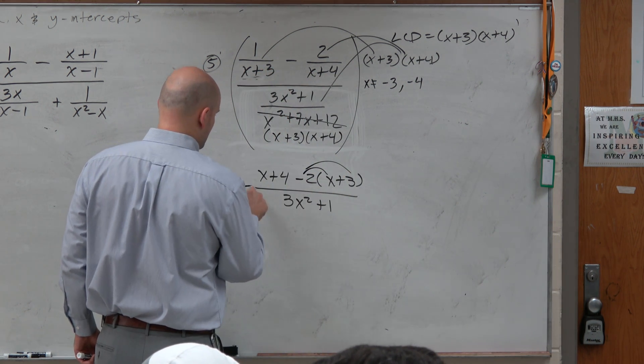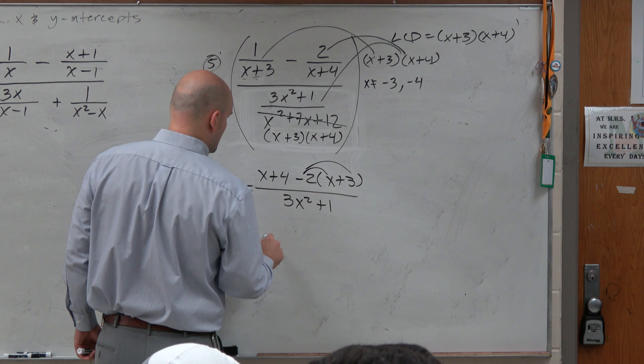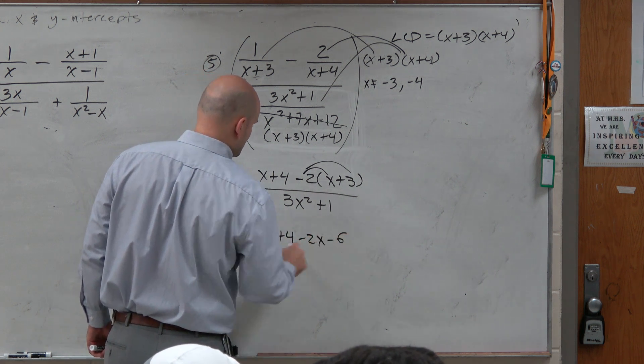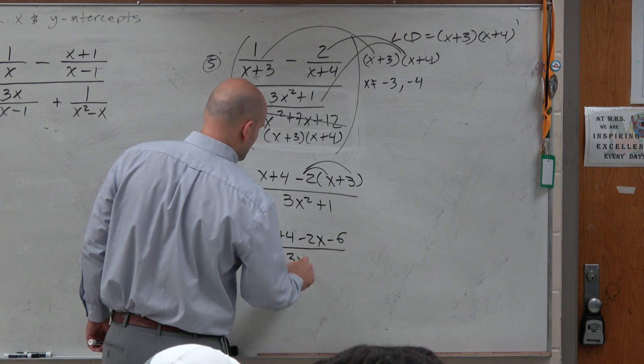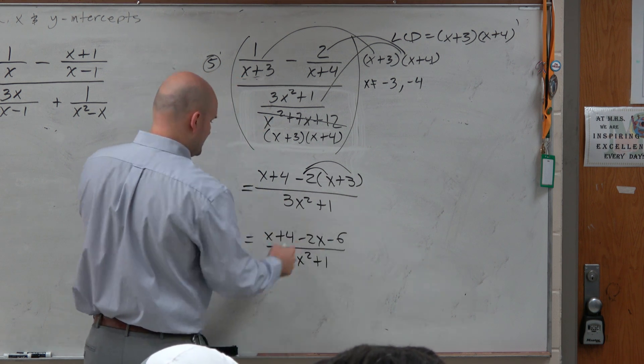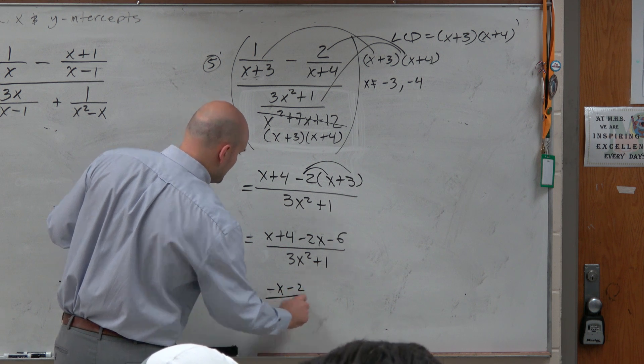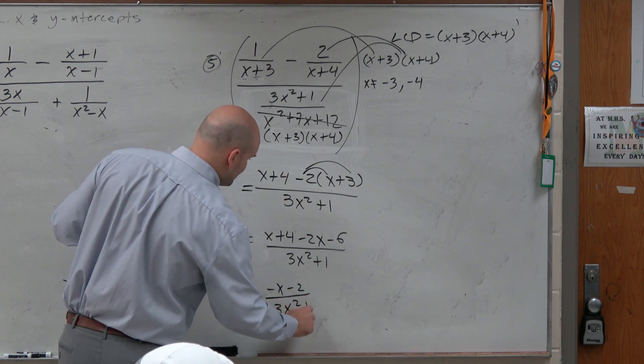So we have x plus 4 minus 2x minus 6, all over 3x squared plus 1. And then we combine like terms, and we get negative x minus 2 over 3x squared plus 1.